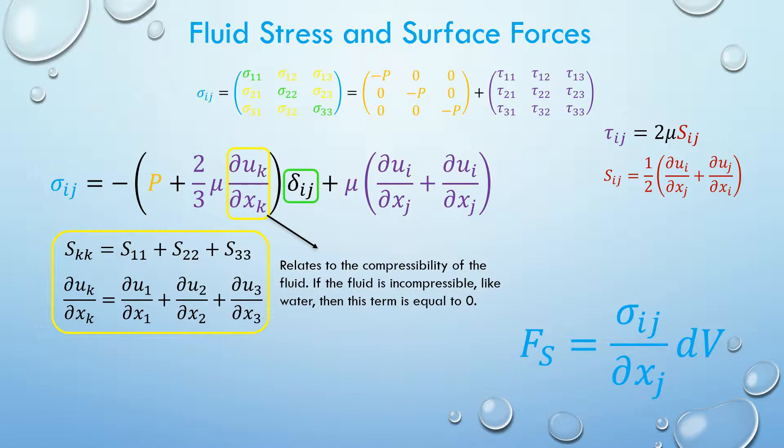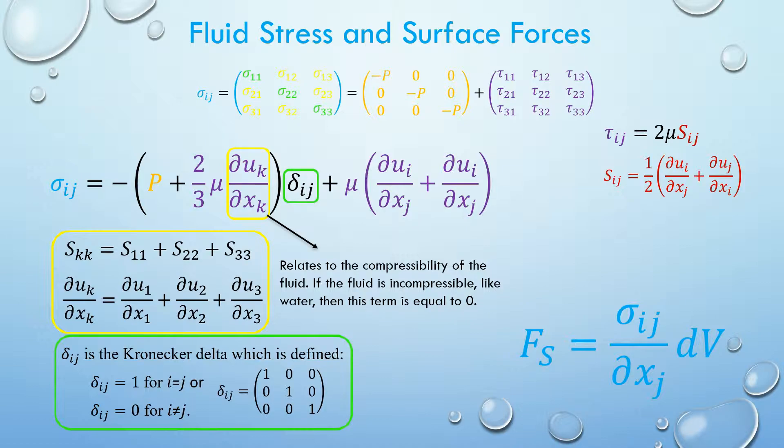This is the Kronecker delta. It just means when i equals j, the delta is one, otherwise it's zero.